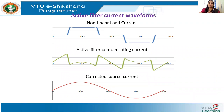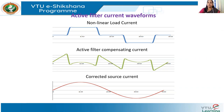This waveform shows the concept in action. The first graph shows the non-linear load current, which is a quasi-square wave — one example, though it need not always be a quasi-square wave. In the quasi-square wave, many harmonic components are present. The active filter generates a compensating current containing all the harmonics. For a quasi-square wave, only odd harmonic components are present; all the odd harmonics together are represented by the second graph shown in green. When this is added to the first waveform, what we get is a sinusoidal current, since only the fundamental component remains.